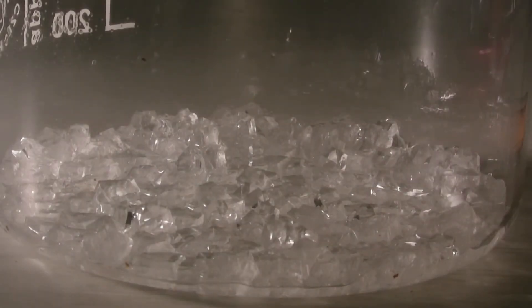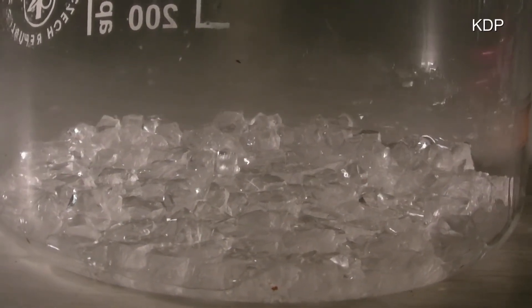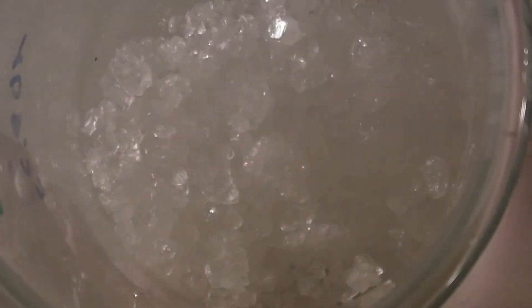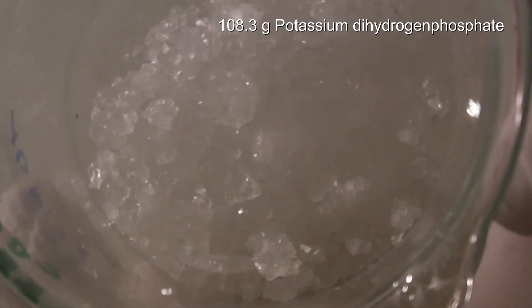Growing large crystals is easy, so it is also used under the abbreviation of KDP. After drying it, 108.3 grams of potassium dihydrogen phosphate were obtained, which would correspond to a yield of 54%.